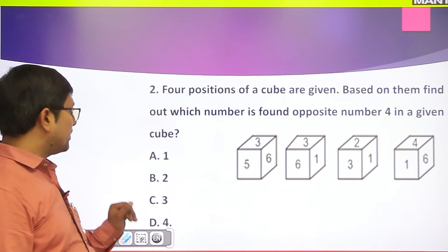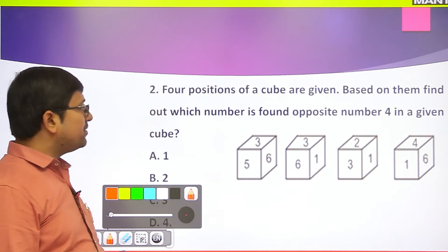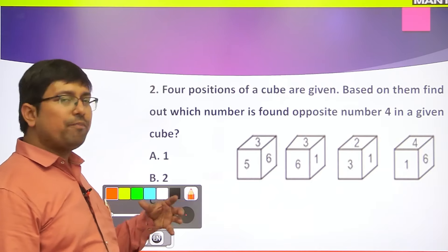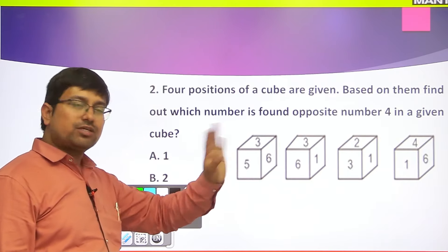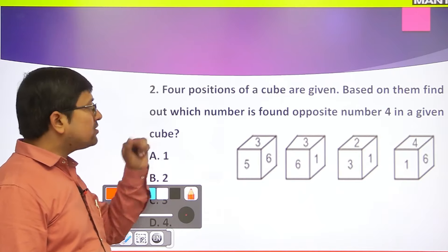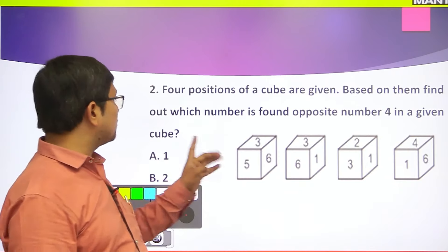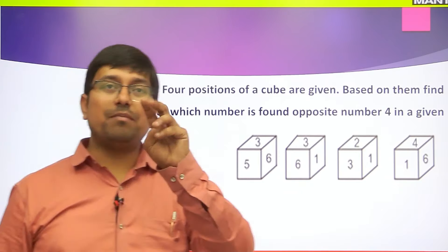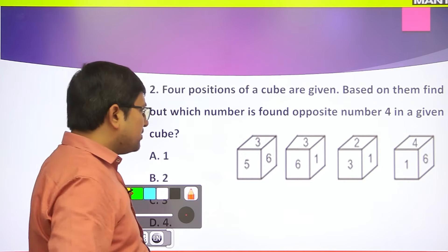Now let us implement this further. Question number 2 is of the same type. Four positions of a cube are given and you are asked to find out which number is found opposite to the number 4. You have to tell what is opposite to 4.